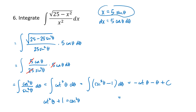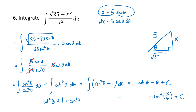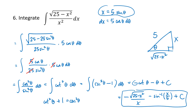What's theta? Since x equals 5 sine theta, theta is the inverse sine of x over 5. For cotangent of theta, we draw a little triangle: since sine of theta is x over 5, that's opposite over hypotenuse, so the adjacent side is the square root of 25 minus x squared. Tangent is opposite over adjacent, so cotangent is adjacent over opposite, which is the square root of 25 minus x squared over x. The final answer is minus the square root of 25 minus x squared over x, minus the inverse sine of x over 5, plus c.